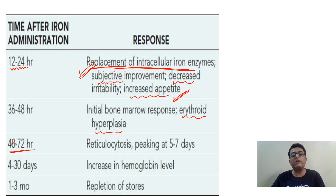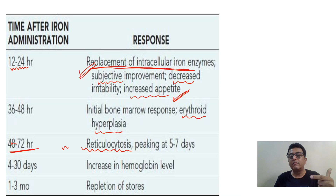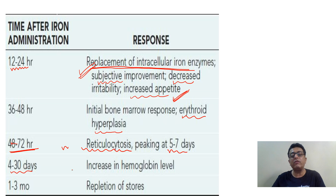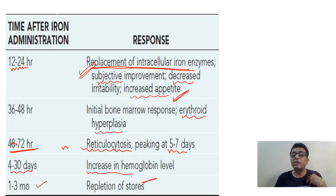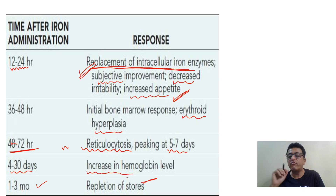Then 48 to 72 hours — reticulocytosis occurs. MCQs come on this. When does retic count increase when you start iron? Third day — 48 to 72 hours — and peaks at 5 to 7 days. When does hemoglobin begin to increase? From the 4th day onward. We continue iron therapy for 3 months because we want to replenish the stores.